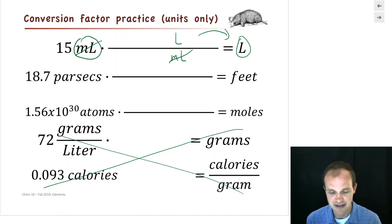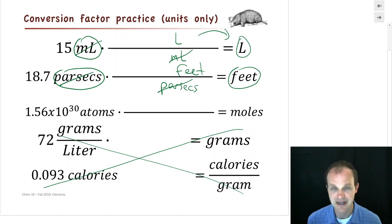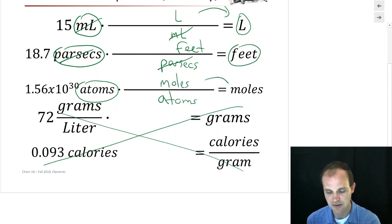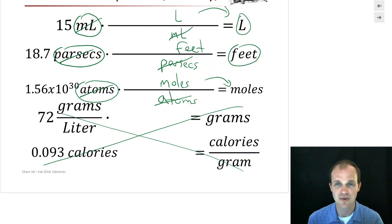Parsecs to feet: I don't know that conversion factor, but I can still set up the problem. Parsecs is on top, so I need parsecs on the bottom, and feet on top — parsecs cancel, one on top and one on bottom. Atoms to moles: atoms is on top, so I need atoms on the bottom, and moles on top. Atoms cancel as we want. If you put atoms on top twice, you'd end up with square atoms — that's meaningless, so make sure units you don't want cancel out.